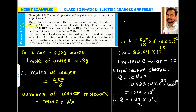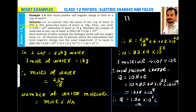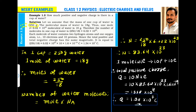We know that the water molecule H₂O is made up of two hydrogen atoms and one oxygen atom. One hydrogen has one proton and one electron, so two hydrogens have two protons and two electrons. Oxygen has eight protons and eight electrons. Therefore, each water molecule contains 10 protons and 10 electrons.